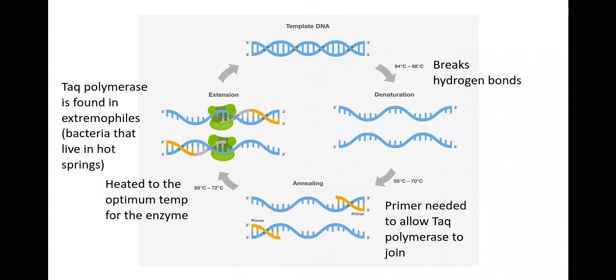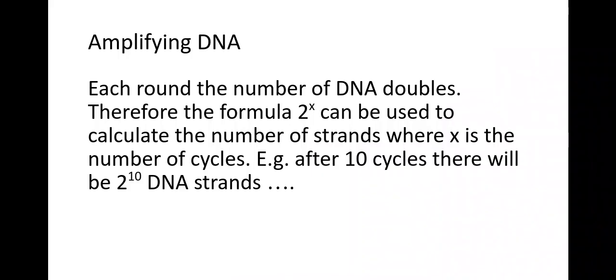So when I'm amplifying DNA, each time we undergo a PCR round, the DNA number doubles. Now you need to be able to work this out on a calculator in terms of how many DNA molecules will be present after a certain number of replications. In order to do that, it would be 2 to the power of however many times it's being duplicated. So for example, after 10 cycles, it'd be 2 to the power 10 strands, and that's how you work it out.